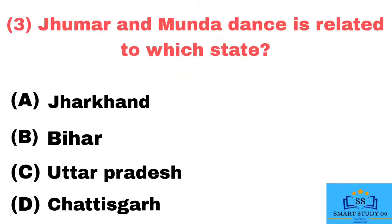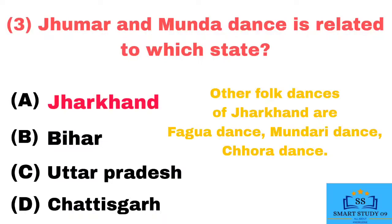Q3. Jumar and Munda dance are related to which state? Answer: Jharkhand. Other folk dances of Jharkhand are Fega dance, Mundari dance, and Chora dance.